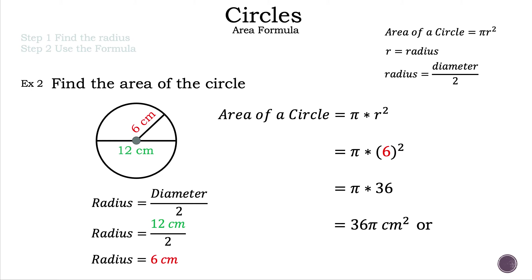Now we convert to a decimal by multiplying 36 and pi. Since pi is 3.14, we multiply 36 times 3.14, and the result is 113.10 — rounded to the nearest hundredth — with units of centimeters squared. We now have two ways to represent the area of a circle with a radius of six centimeters.